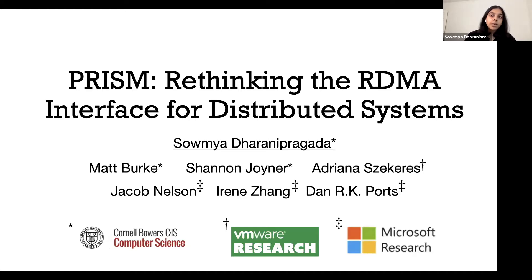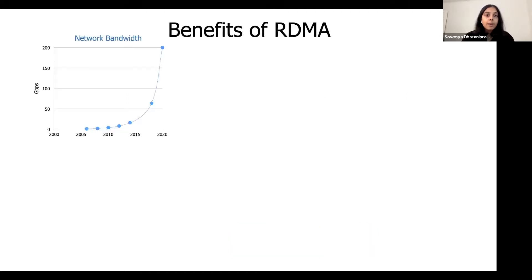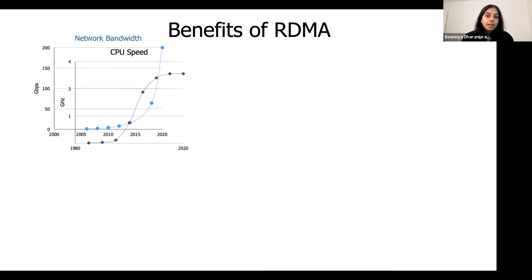Hey everyone, I'm Samia and I'm here to talk about our work on re-envisioning the current RDMA interface for distributed systems. The past few years have seen a continual increase in network bandwidth, and as signaled by Moore's law, CPU speeds have begun to stagnate. Therefore, it has become critical to reduce the involvement of the CPU when it comes to networking.